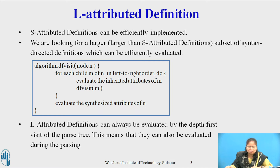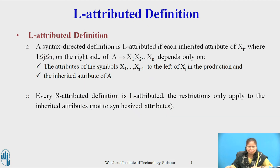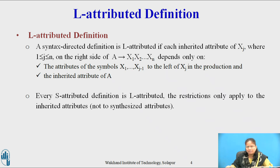The 'L' stands for 'left', as the attribute information flows from left to right. A syntax-directed definition is L-Attributed if each inherited attribute of xj, where 1 ≤ j ≤ n, on the right side of a production A → x1 x2 ... xn, depends only on the attributes of symbols x1, x2, ..., xj-1 to the left of xj, and the inherited attributes of A. Every S-attributed definition is L-Attributed, because the restriction applies only to inherited attributes and not to synthesized attributes.